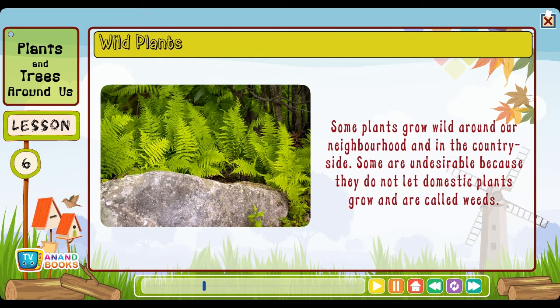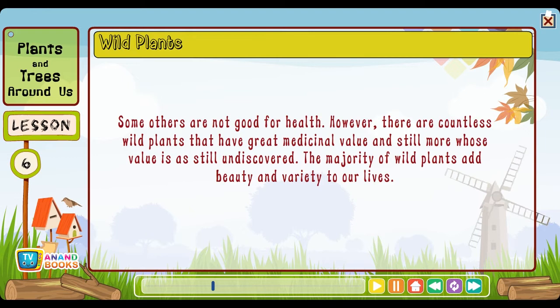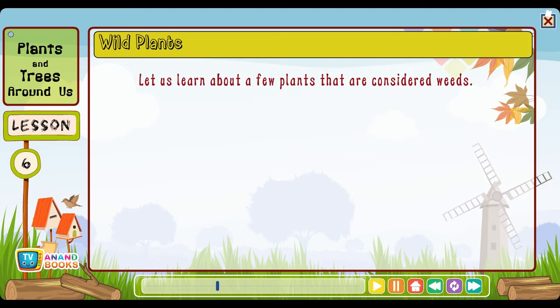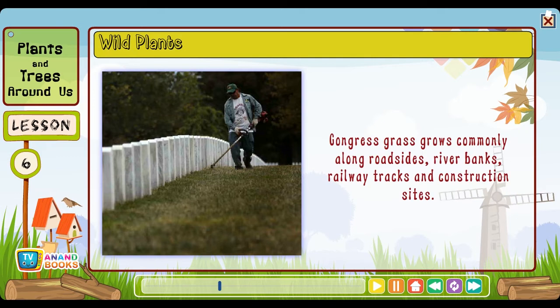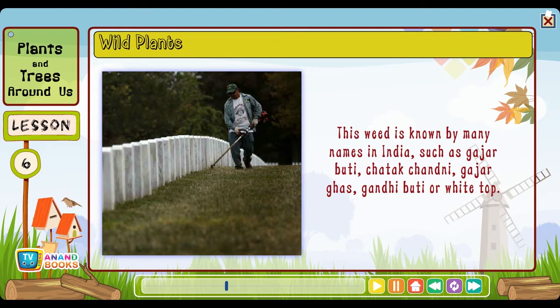Wild plants: Some plants grow wild around our neighborhood and in the countryside. Some are undesirable because they do not let domestic plants grow — these are called weeds. Some others are not good for health, however there are countless wild plants that have great medicinal value and still more whose value is still undiscovered. Congress grass grows commonly along roadsides, river banks, railway tracks and construction sites. It is known by many names in India such as Gajar Booty, Chatak Chandani, Gajar Ghas, Gandhi Booty or White Top. It is a threat to plants, animals and human beings as it causes skin problems and allergies.